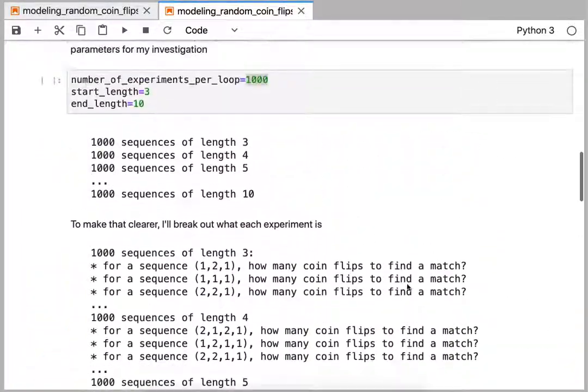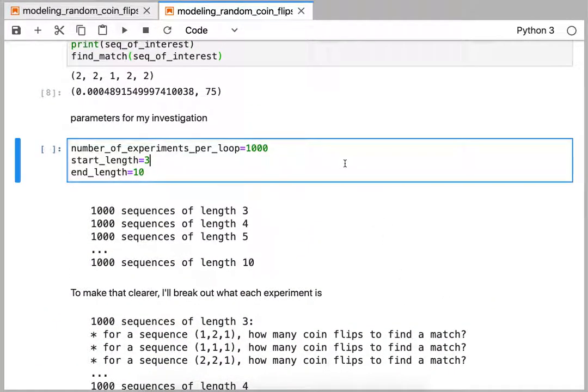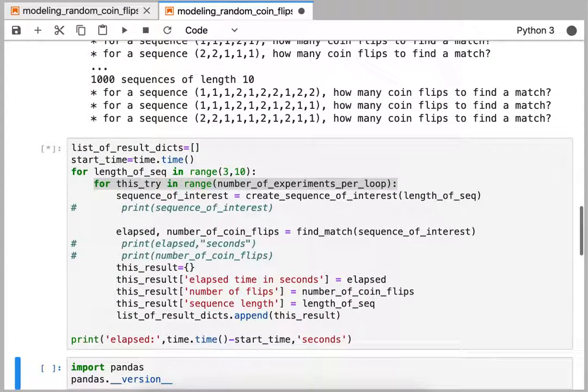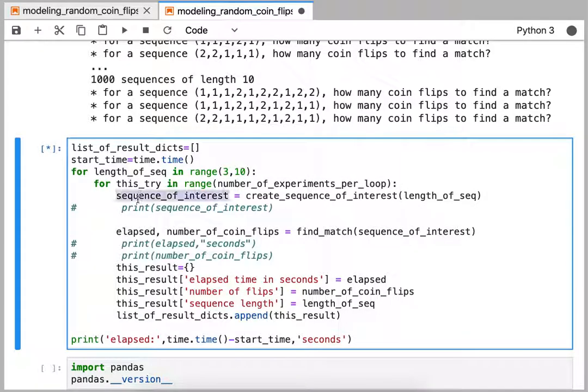Let's run that. Let's make sure I ran this. So this cell is executing, and basically we're going to create a sequence of interest, that element, that list is then going to be searched through this function that we wrote called find match. And that will return two values: how long it took to find a match and the number of coin flips associated with that.